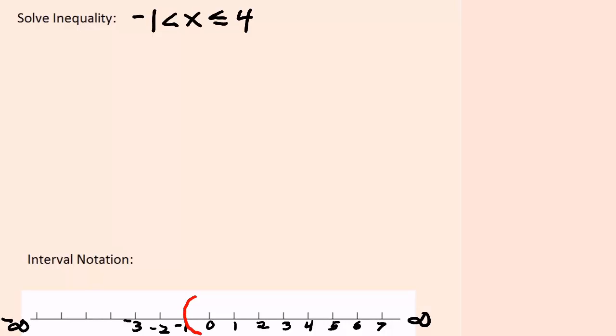Now I put a parenthesis through negative 1 because that has a strict inequality beside it and a bracket through positive 4 because that has a non-strict inequality beside it. And notice how the parenthesis and the bracket actually enclose the numbers that x can equal.